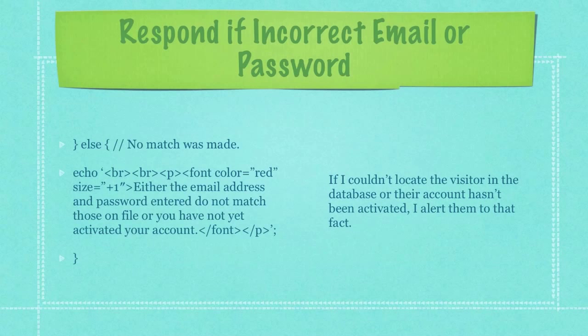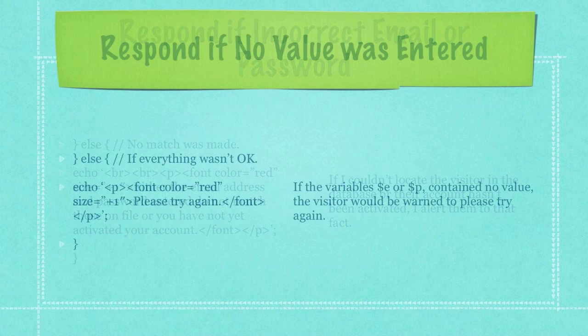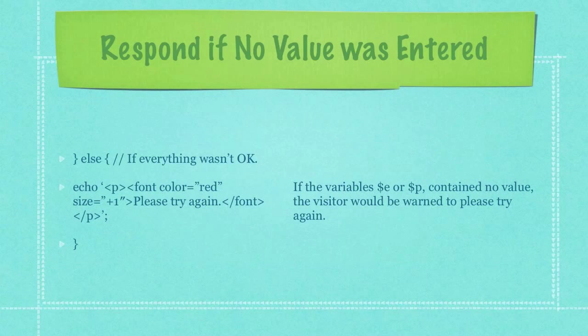If I couldn't locate the visitor in the database or their account hasn't been activated, I alert them to that fact. If the variables E or P contain no value, the visitor would be warned to please try again.